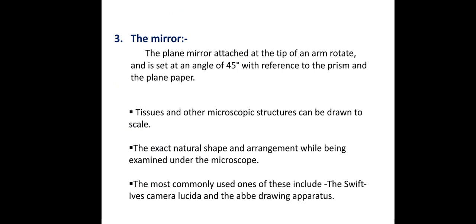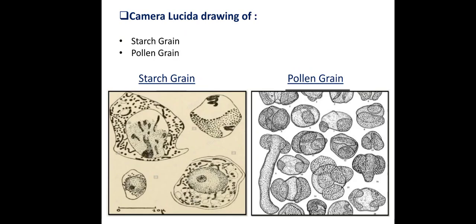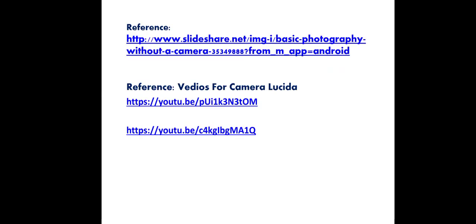The most commonly used devices include the Swift Sleeve Camera Lucida and the Abbe drawing apparatus. A1 represents the Swift Sleeve Camera Lucida and B1 represents the diagram showing the use of Camera Lucida with the Hink drawing board. When observing with the help of Camera Lucida, starch grains and pollen grains can be visualized and drawn accurately.